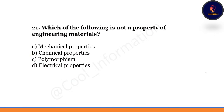Which of the following is not a property of engineering material? Option A: mechanical properties. Option B: chemical properties. Option C: polymorphism. Option D: electrical properties. Correct option is C — polymorphism is not a property of engineering materials.